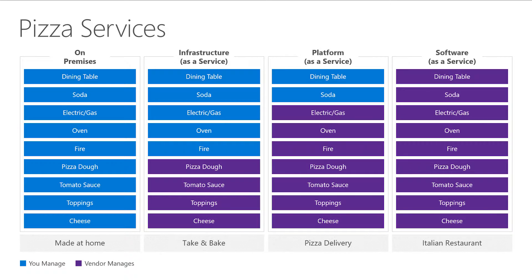In an on-premises scenario, this is the made-at-home pizza version. I'm providing everything — the cheese, the toppings, the pizza dough, the gas, the fire, the electric, the soda, the silverware, the dining room table, the whole thing. In infrastructure as a service, this is the take-and-bake model. I'm going to the store, buying a pizza that is made but not yet cooked, bringing it home, finishing it there, and consuming it there at my house as well.